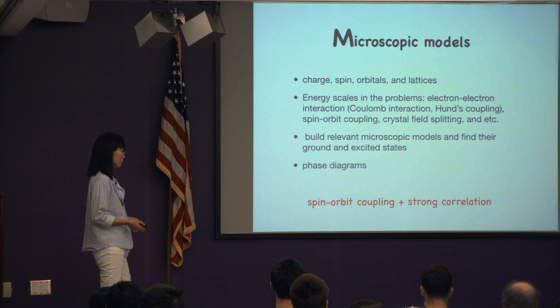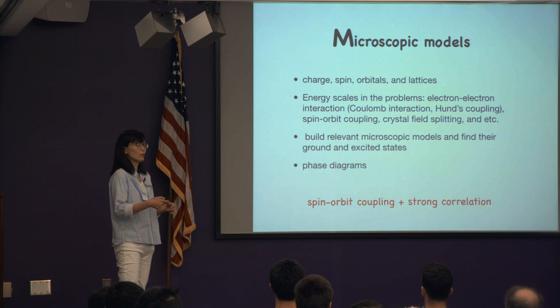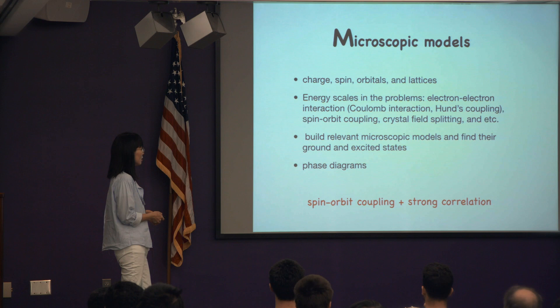Then you can build relevant microscopic models — minimal models — find the ground state, compare with experimental measurements, and construct phase diagrams. Here I'll be focusing on the spin-orbit coupling in a certain lattice system and strong Coulomb interactions.